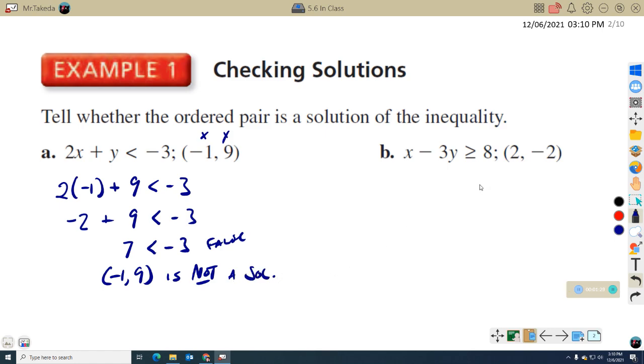In example B, x is 2, y is negative 2. So x is 2 minus 3 times negative 2. That's greater than or equal to 8. Following the order of operations, negative 3 times negative 2 is 6.